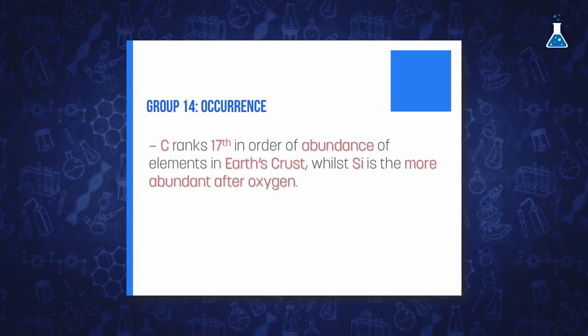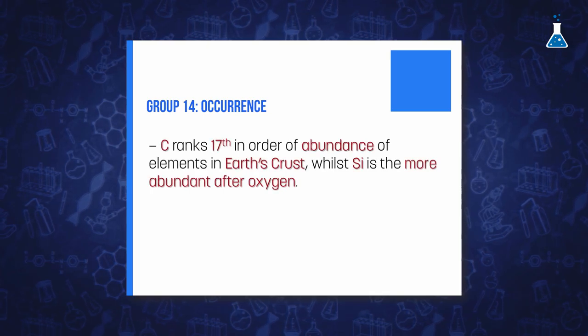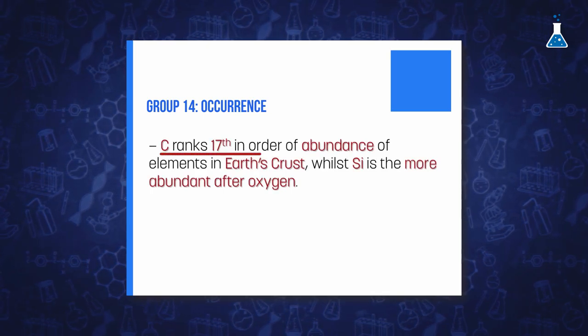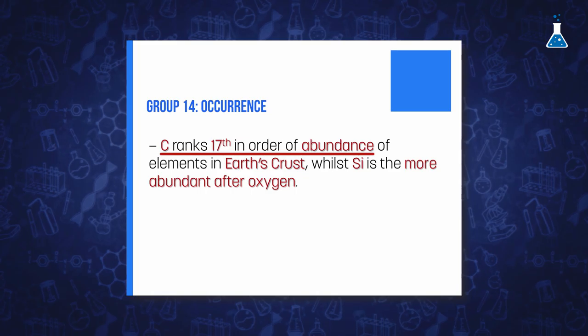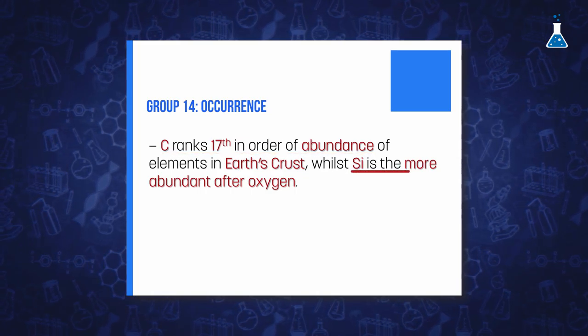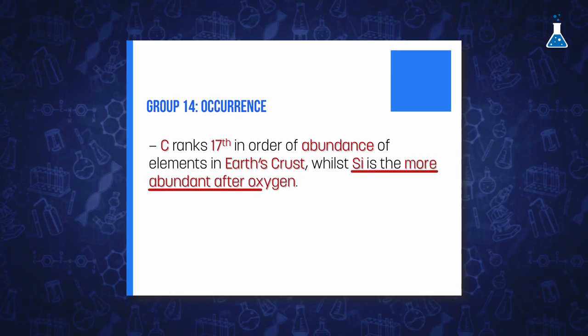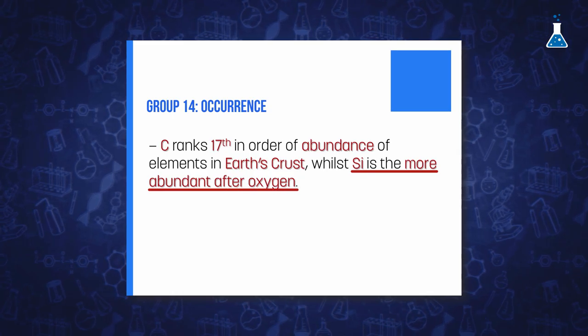With respect to the content of these elements in the Earth's crust, we find that carbon ranks 17th in the order of abundance of elements, while silicon is the most abundant element of the periodic table after oxygen.